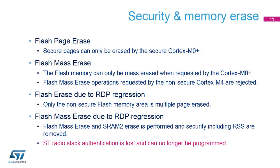The STM32WB has a single Flash Memory for both the Cortex-M4 and Cortex-M0 Plus software. The Cortex-M0 Plus security prevents Secure Flash Memory pages from being erased by the Non-Secure Cortex-M4. A Cortex-M4 Flash Mass Erase operation will be rejected, and a Multiple Block Erase has to be used to erase the Cortex-M4 software. When regressing the read protection from Level 1 to Level 0, only the Non-Secure part of the Flash Memory will be erased. The Secure Cortex-M0 Plus software will be retained. The complete Flash Memory is mass-erased and the security is removed only when regressing the read protection from Level 1 to Level 0.